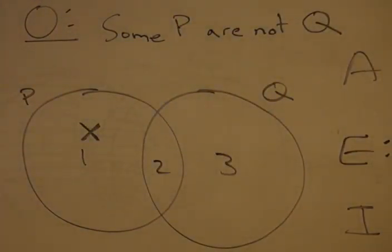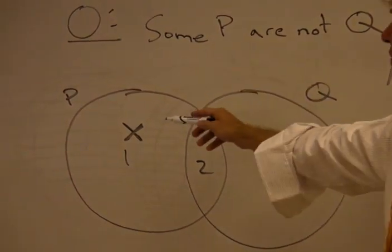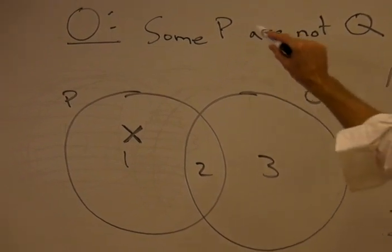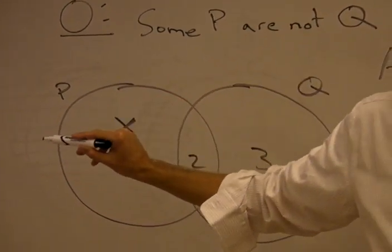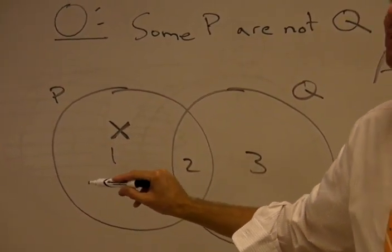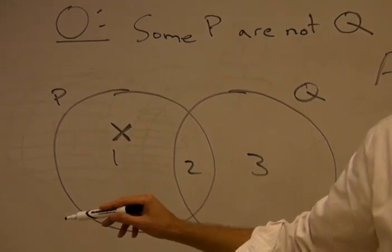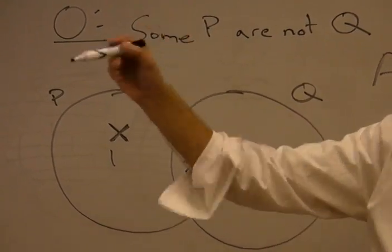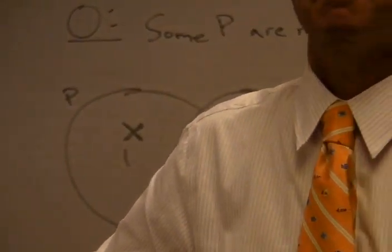You'll recall that some P are not Q was diagrammed like so. Now how do we get the statement that we distribute all of class Q? Now this is going to sound bizarre but try to let it sink in. What we are basically saying is that this member P is excluded from the entire class of things Q. So technically we're talking about all Q. We're saying the whole class of things Q are not this person who we're talking about P.